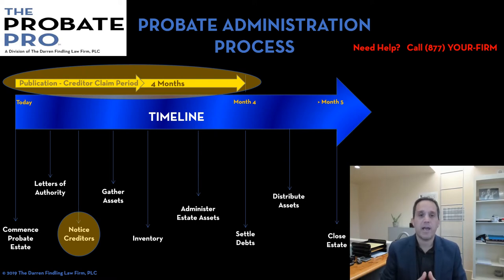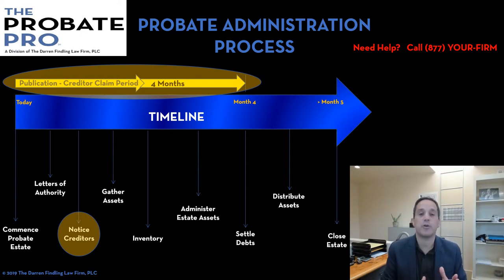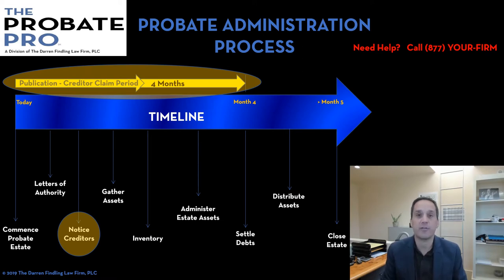As a personal representative, if you perform both of these functions correctly — giving notice to known creditors as well as publishing — you absolve yourself of liability if you then distribute the estate and those creditors have failed to come forward. So adherence to these responsibilities is really critical to your role in serving as personal representative.